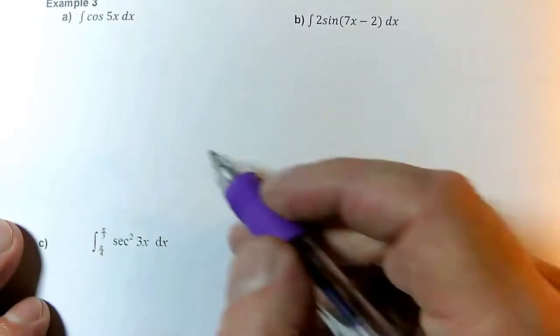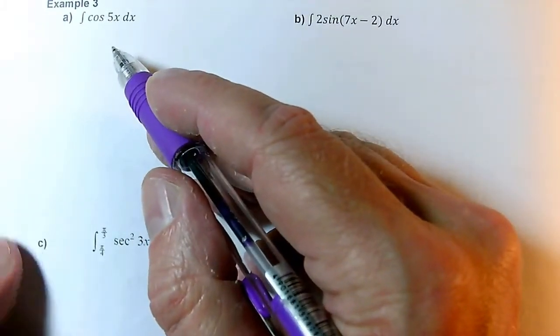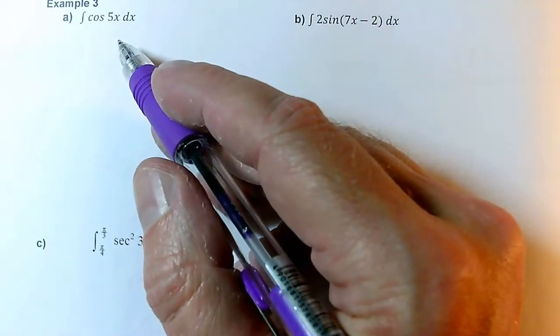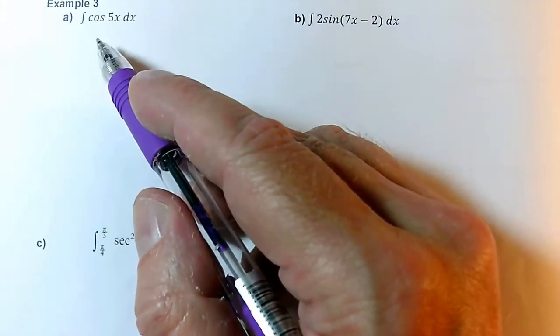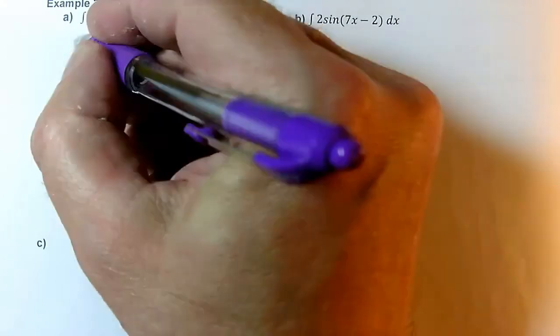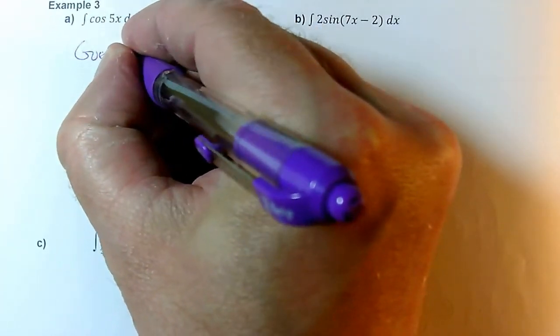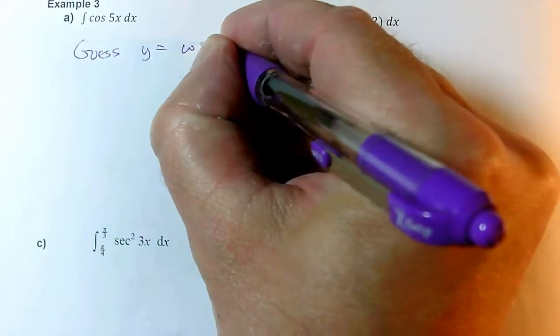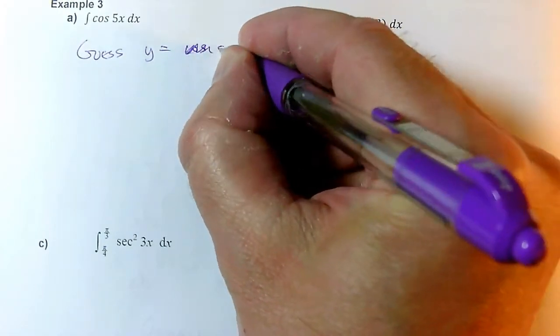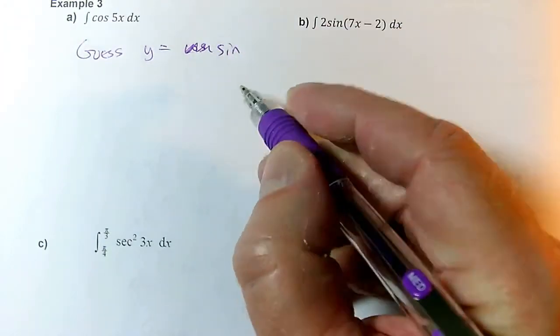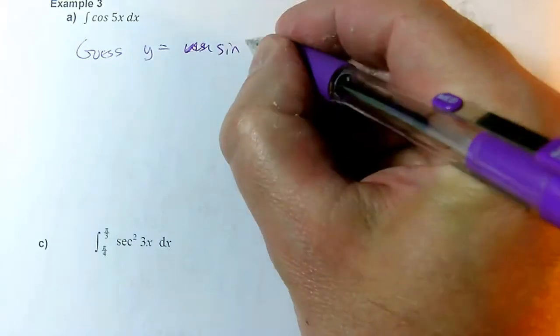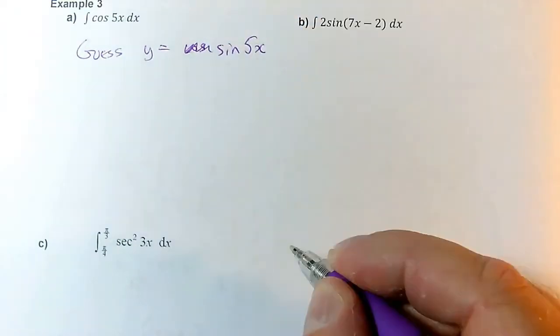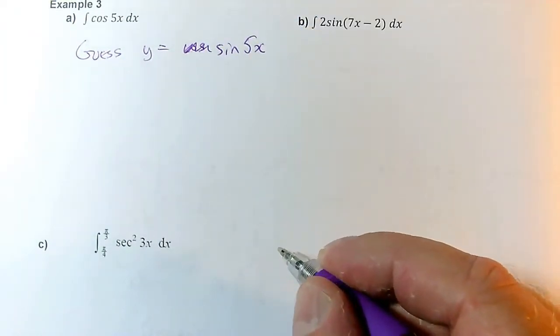Now it's time to integrate some trig functions. So we're integrating cos 5x. Just working this out from scratch, what kind of thing do we know that will differentiate to give a cos? We could guess that y equals cos of something, or even sine of something, even better. To get cos of 5x, I'm going to need to start with sine of 5x.